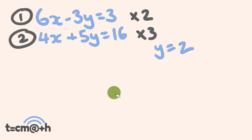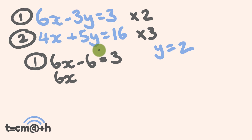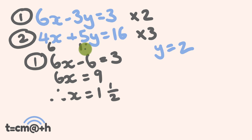Now let's substitute our value for y into equation 1. We have 6x, and negative 3y — negative 3 times 2 — is minus 6, and that is equal to 3. So 6x minus 6 equals 3 — let's add 6 to both sides — 6x is equal to 9. Therefore x is going to equal 9 divided by 6, which is going to be 1 and a half. Not a whole number — a bit tricky. Let's substitute into the second equation to check: 4 times 1 and a half is 6, and 5 times 2 is 10. 6 plus 10 is equal to 16. Therefore our answer is correct.